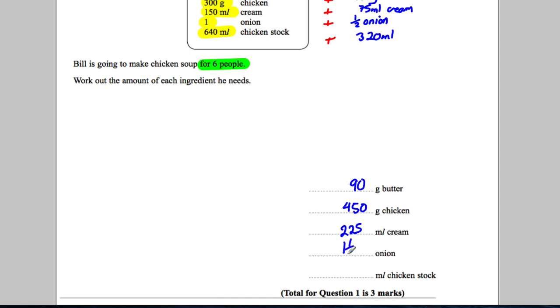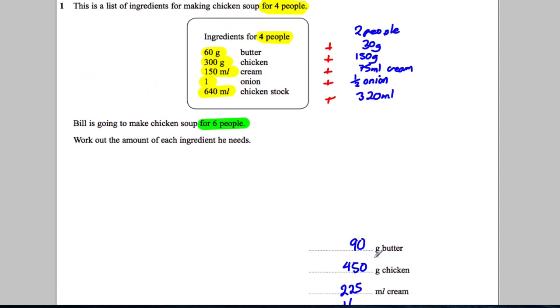It's going to be one and a half onions, and 640 add 320, which is 960 millilitres of chicken stock.